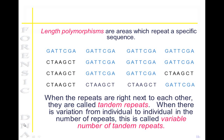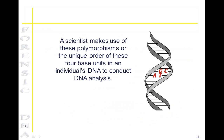Sequence length repeats can also be generated with the four nucleotides within a DNA fragment. Length polymorphisms are areas which repeat a specific sequence. When the repeats occur right next to each other, they are called tandem repeats. When there is variation from individual to individual in the number of repeats, this is called variable number of tandem repeats. It is these polymorphisms — the unique order of these four base units — that the forensic scientist takes advantage of to conduct DNA analysis.